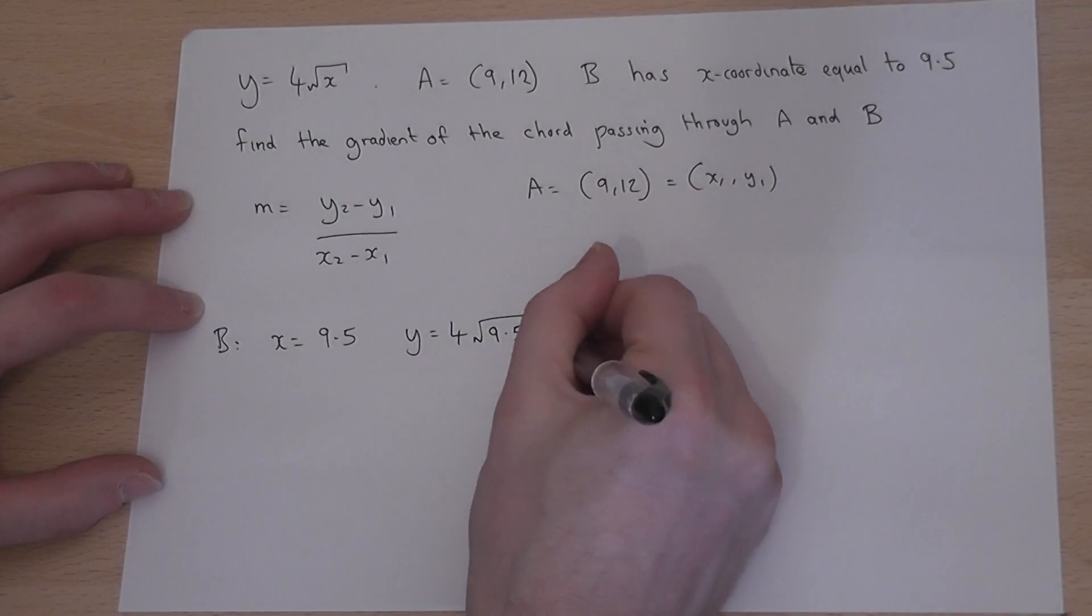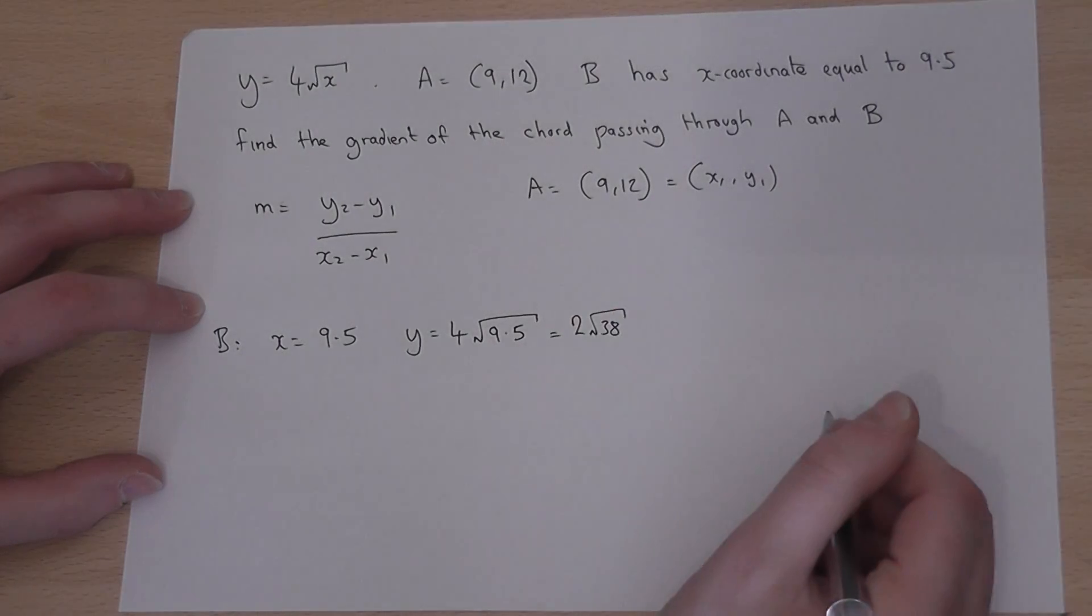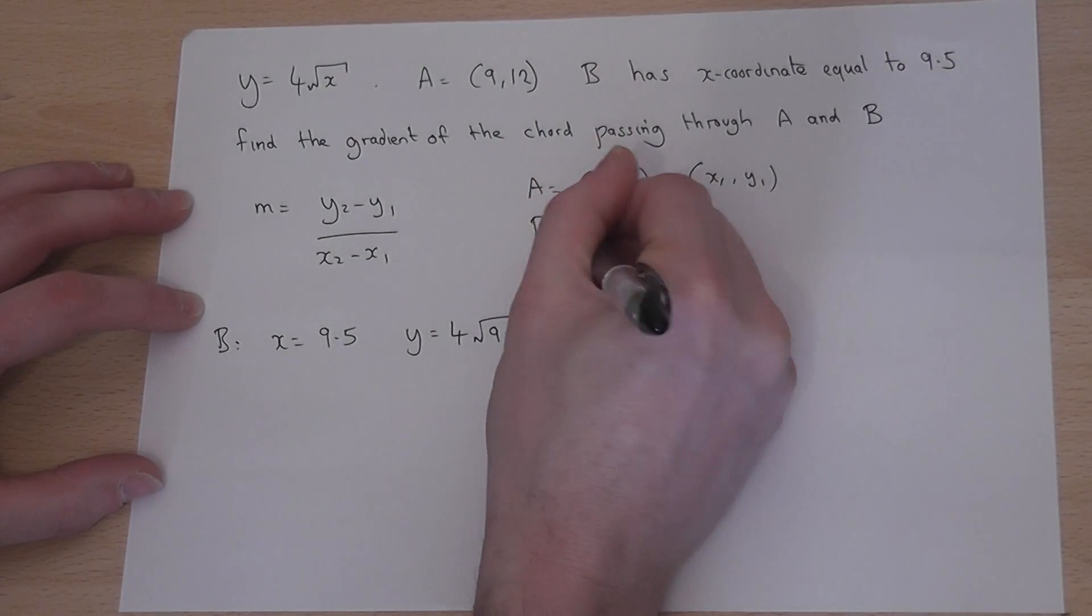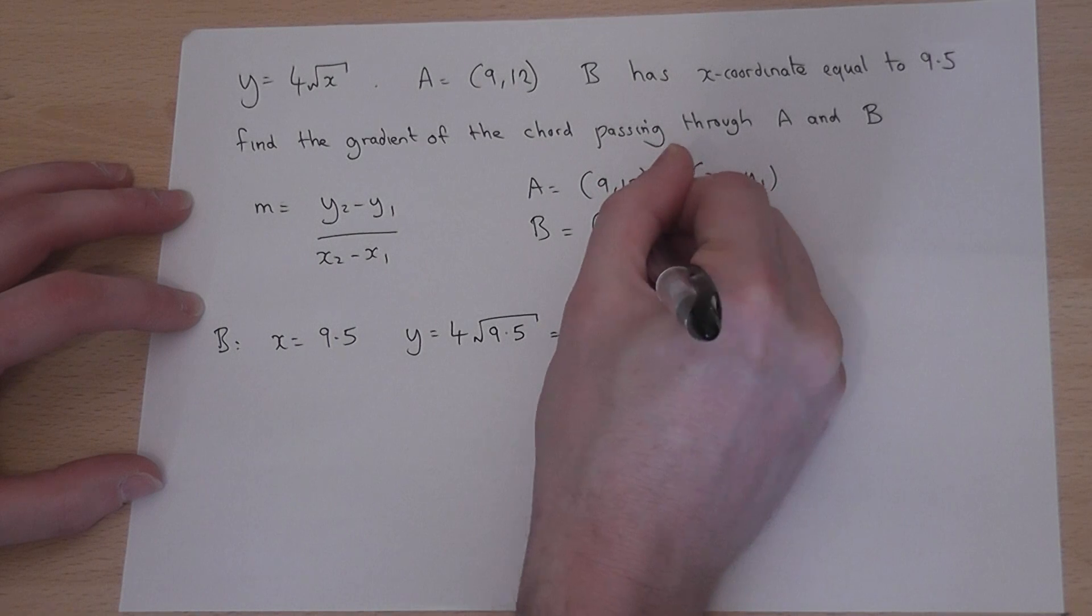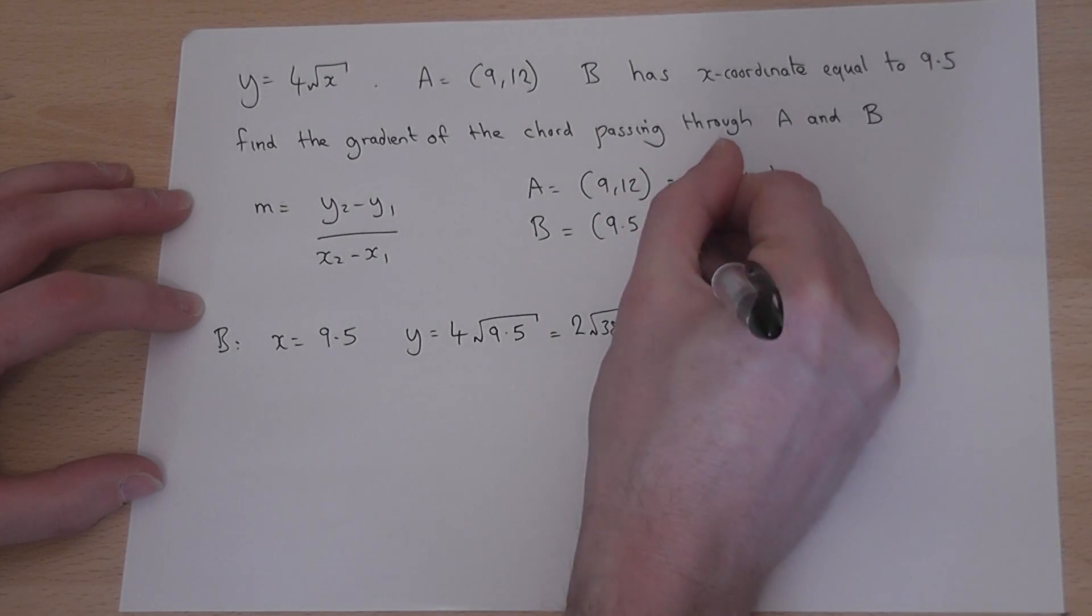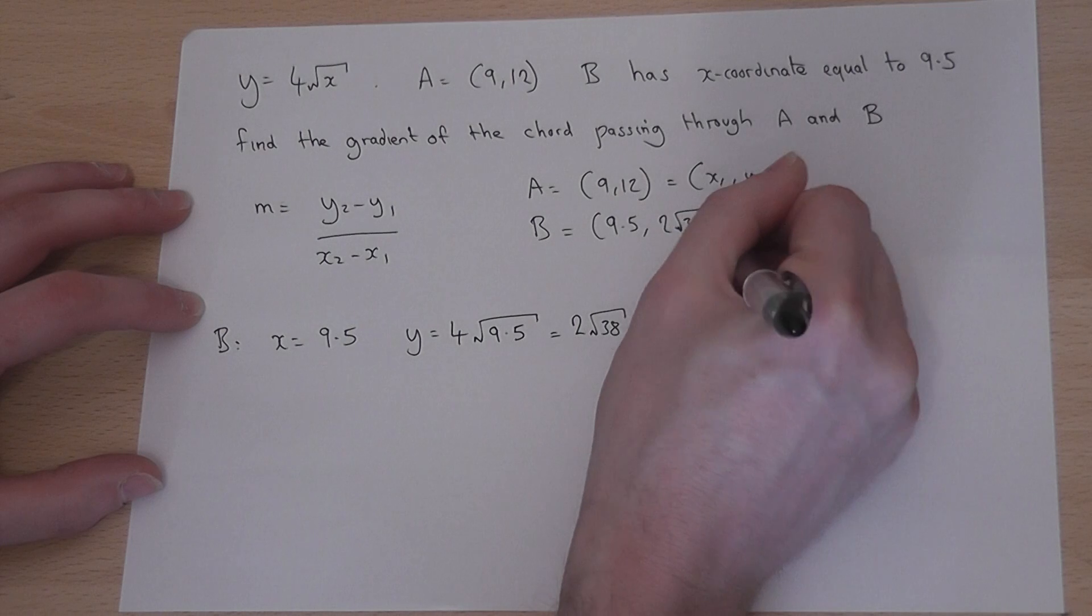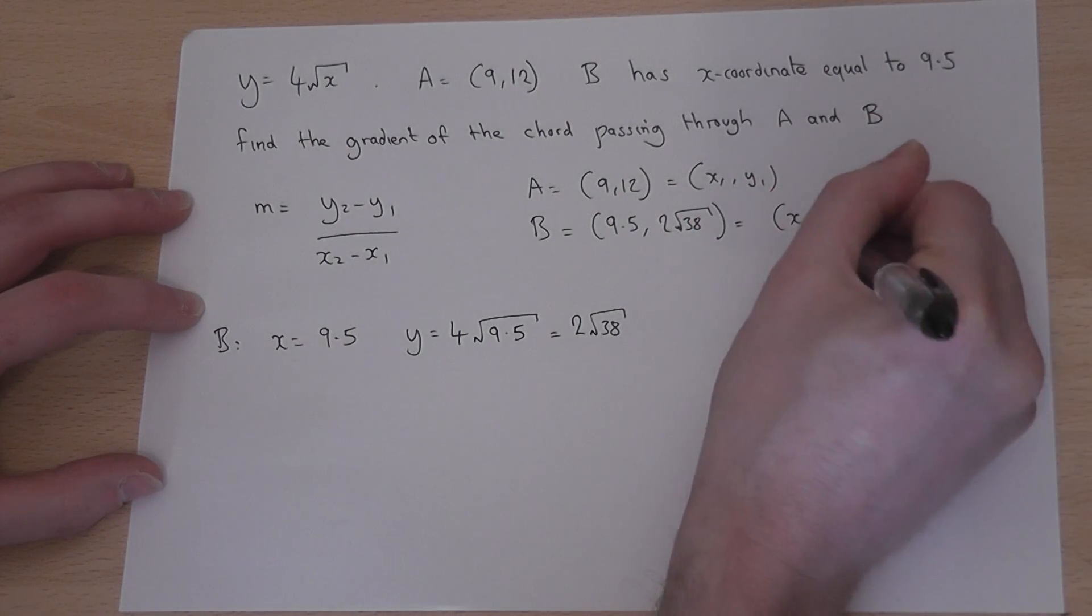So, coordinate B is (9.5, 2 root 38), and that is my second coordinate.